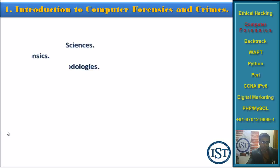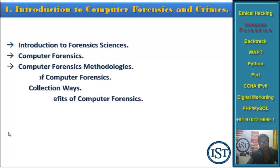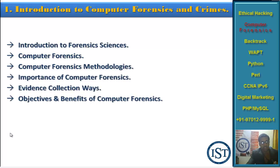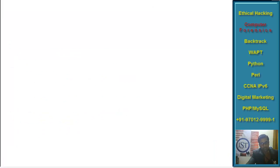Chapter 1 covers Introduction to Computer Forensics and Crimes: introduction to computer forensics sciences, the evolution of forensics, what computer forensics is, computer forensics methodology, importance of computer forensics, evidence collection methods, objectives and benefits. It also covers computer crimes and types of computer crimes — you must know what crimes happen on the internet and standalone computers — plus forensic investigation steps and professional conduct and legal issues involved in handling cybercrime cases.